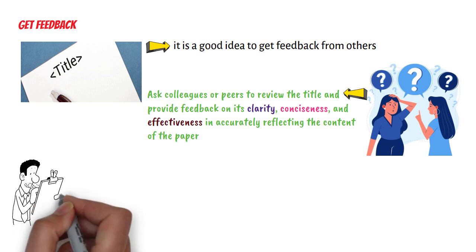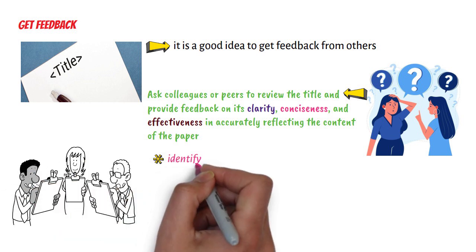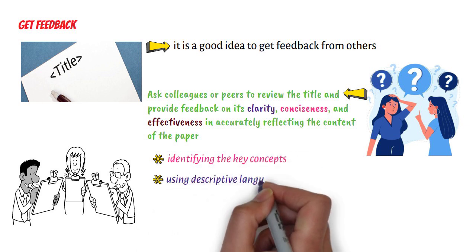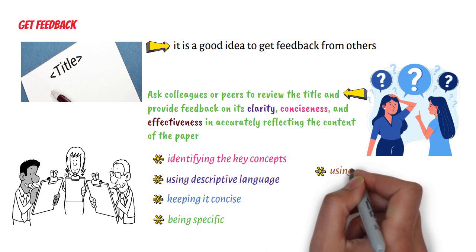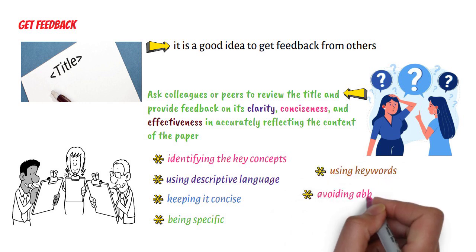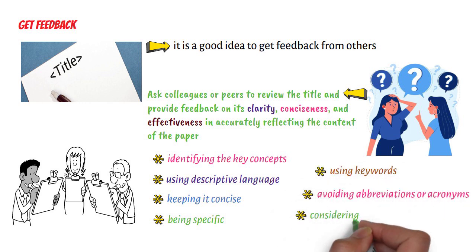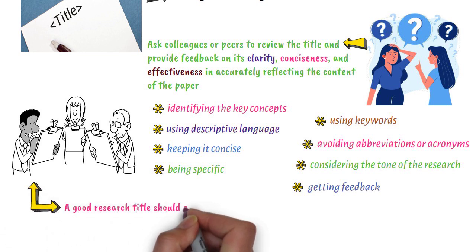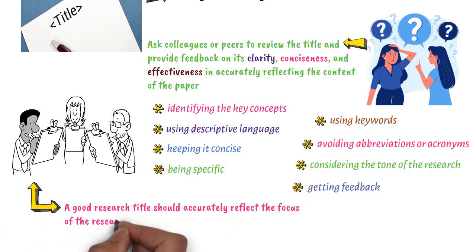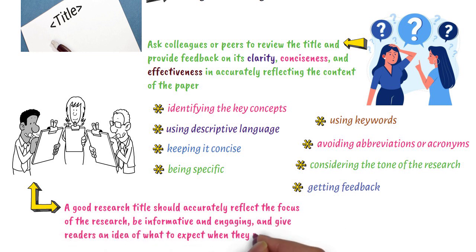In conclusion, writing a research title involves identifying the key concepts, using descriptive language, keeping it concise, being specific, using keywords, avoiding abbreviations or acronyms, considering the tone of the research, and getting feedback. A good research title should accurately reflect the focus of the research, be informative and engaging, and give readers an idea of what to expect when they read the paper. Thank you.